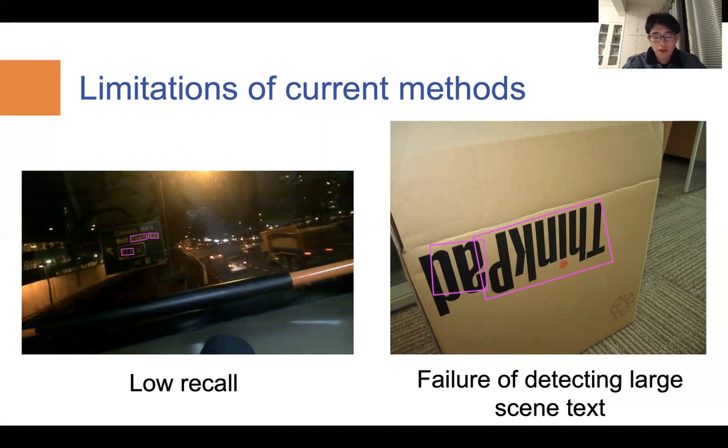On the other hand, when it comes to scene text of large scales, as shown on the right, the current model tends to regress multiple instead of one bounding box to cover this scene text.